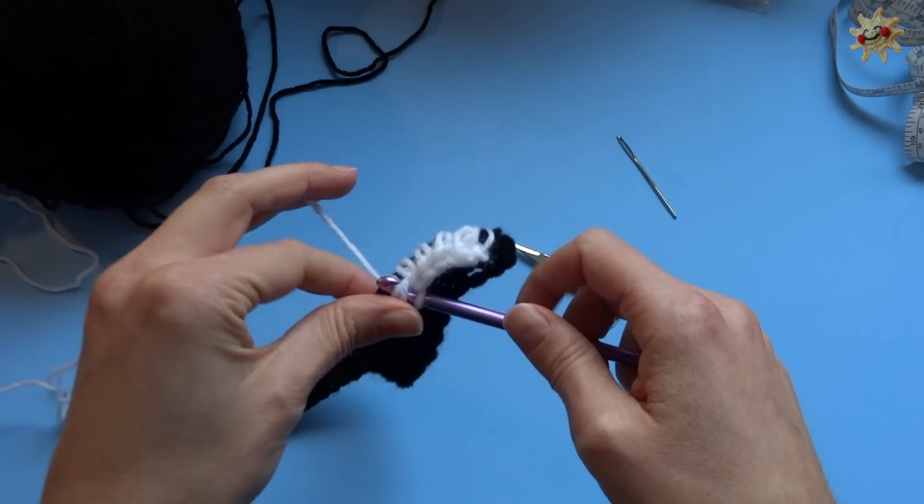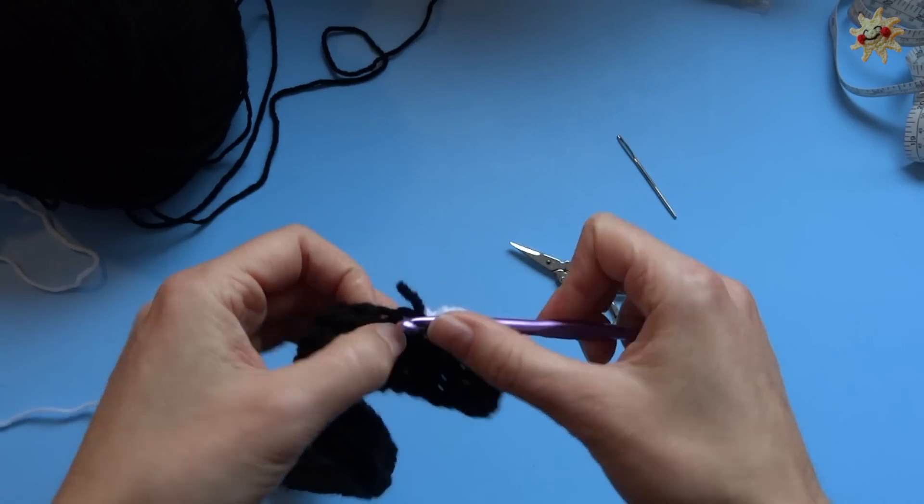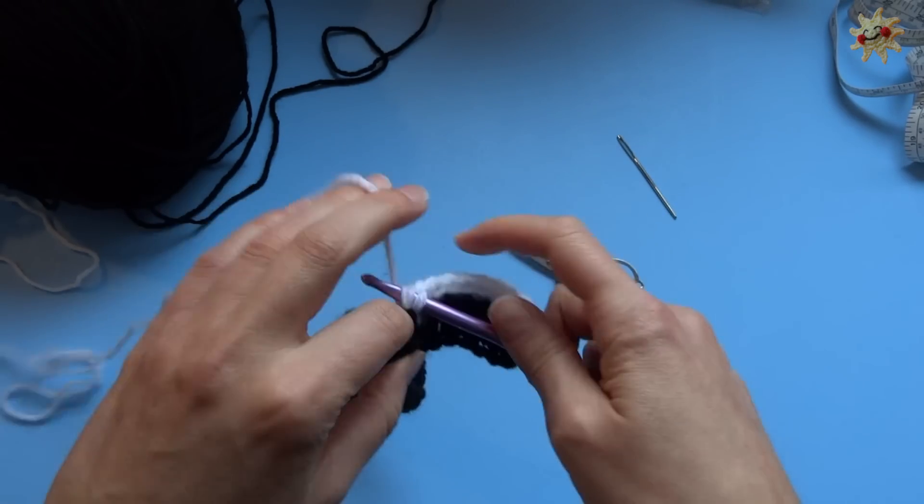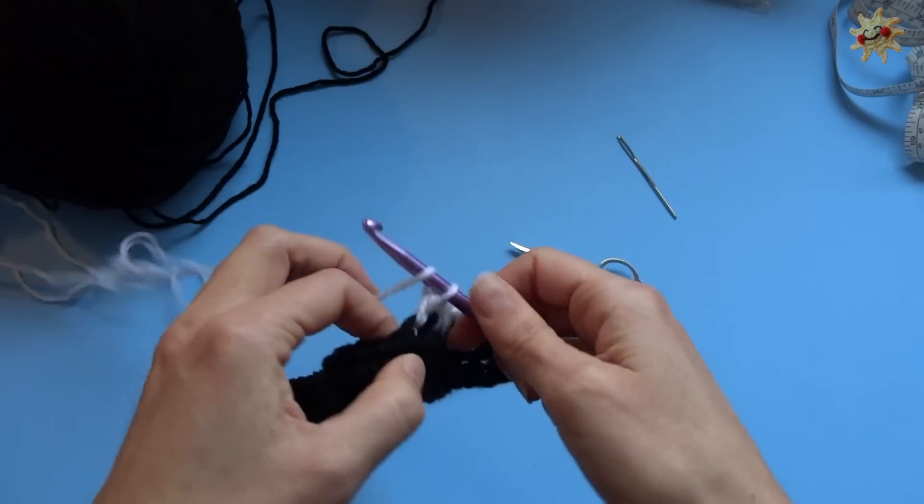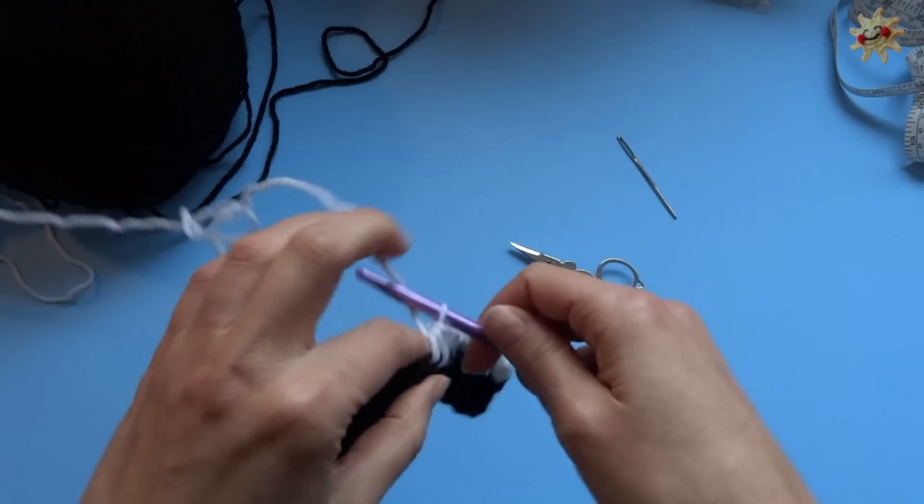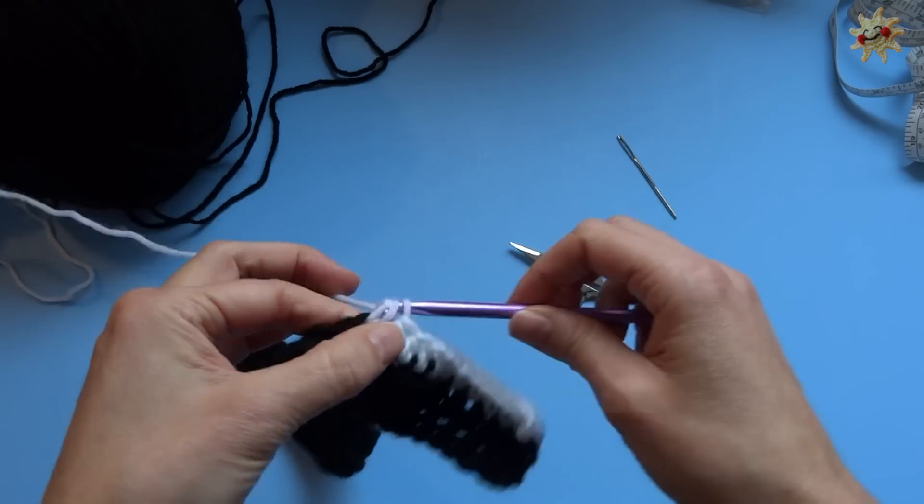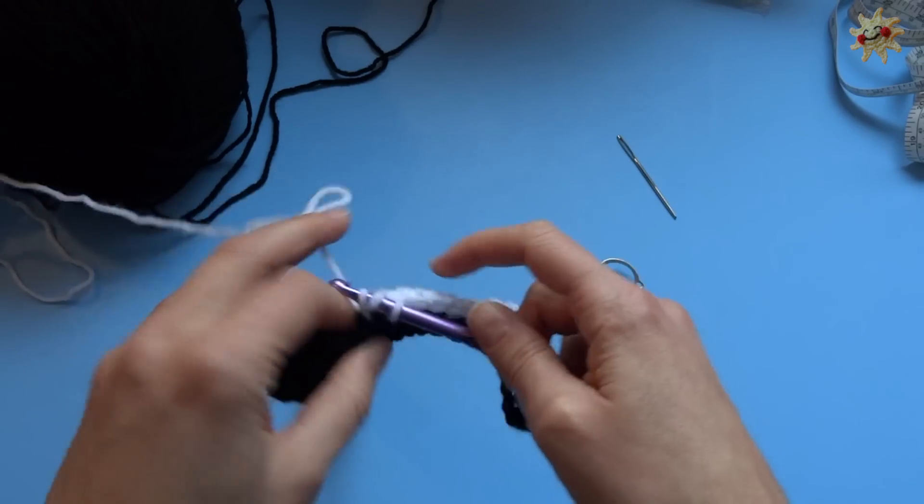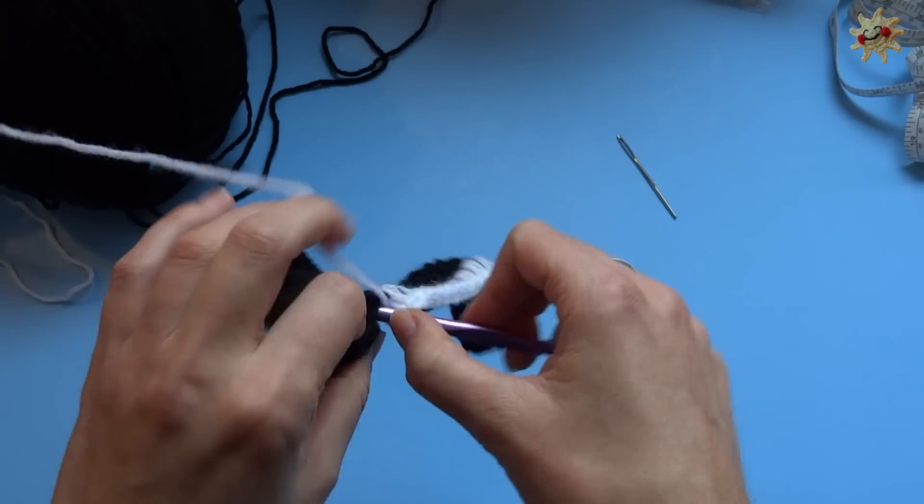And you're just going to continue every single row from here on out. It's just going to be plain half double crochet. You're going to change colors every two rows. And of course, you could make these rainbow if you want to. And I just might do that now that I think about it. But I'm just going to use black and white for today.